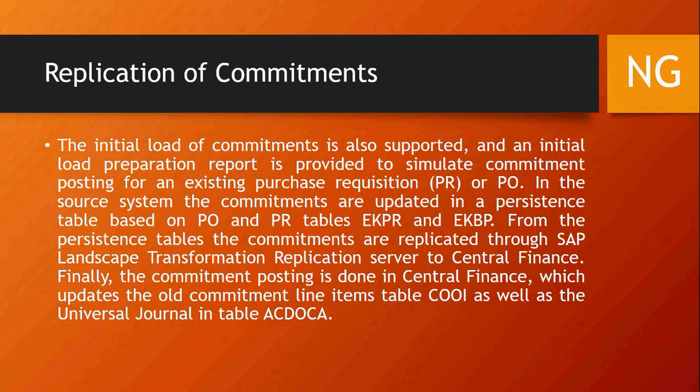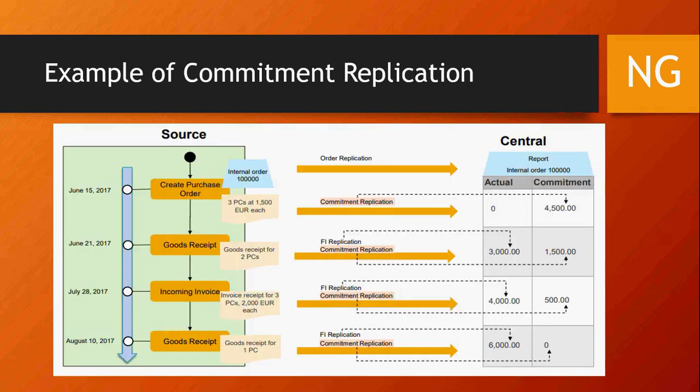Commitment is also replicated now. Any commitment made on the project or any PO created is replicated — not the PO itself, but the commitment. Initial load of commitment is also supported; a preparation report is provided to simulate commitments. Source system commitments are updated in the persistence table based on PO or PR, and from that persistence table the transformation happens. For example, you have a commitment in the source system for three PCs; that commitment is updated in Central Finance. When you do a GR for two PCs, the commitment is reduced and actuals are posted for 3,000 euros. Then when an invoice is received for three PCs, the commitment is reduced further and the invoice is booked on actuals.